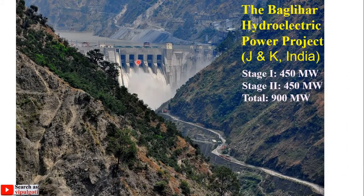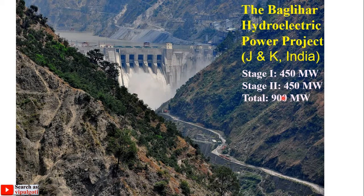Let's first look at the real image of a hydro power plant. This hydro power plant is at Baglihar in Jammu and Kashmir, having 450 megawatt capacity in Stage 1, extended to another 450 megawatt in Stage 2, giving a total capacity of 900 megawatt. This is a very important figure to understand the advantages and disadvantages of hydro power plants.